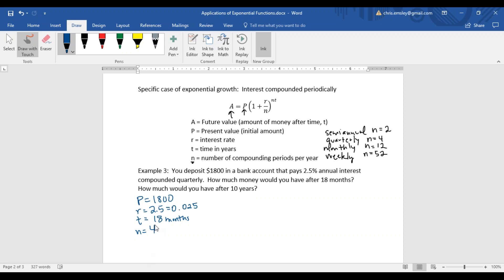We have to be careful here because it asked us for how much money in 18 months, but in this formula, t always needs to be in terms of years. So we need to do a quick conversion. 18 divided by 12 gives 1.5. 18 months is the same as 1.5 years and that's what we want to use in our formula.